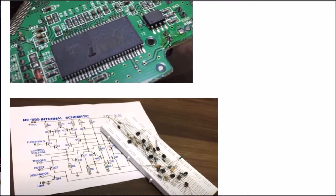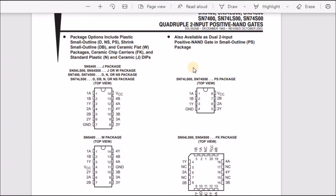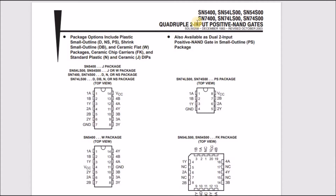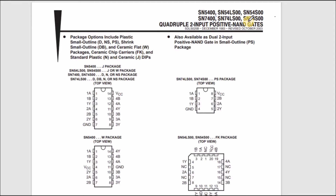Let's start by learning how to read the data sheet of an IC. This is an example of a data sheet covering a family of ICs. We have about six ICs here, each with a serial number starting with 54, then 54LS00, 54S, and so on. As an example, this IC is SN74LS00.